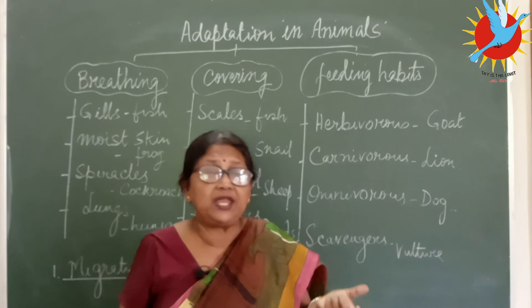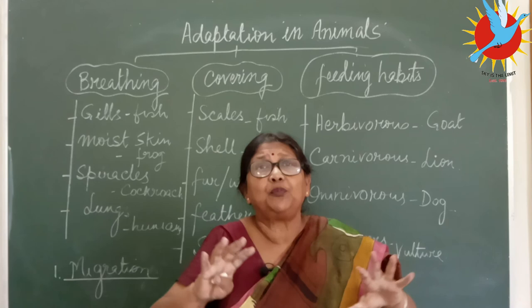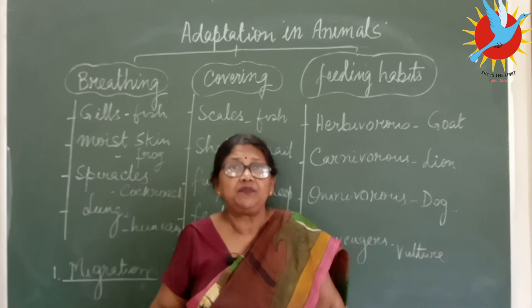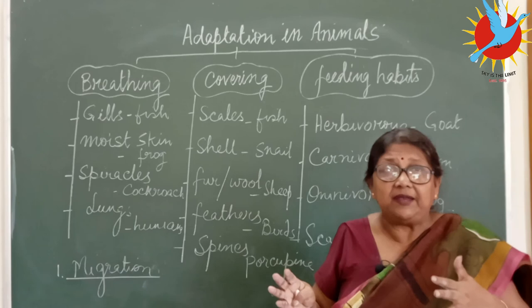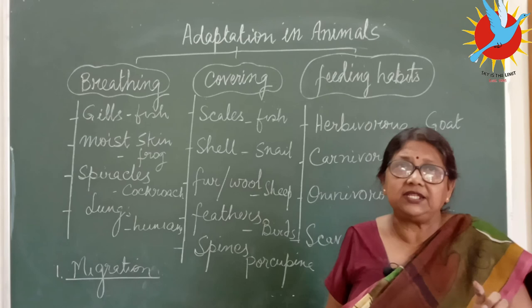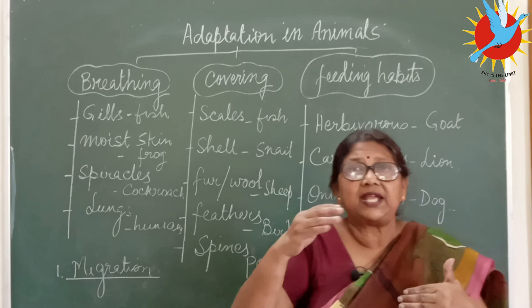From the Arctic and Antarctic regions, during winter, large flocks of birds migrate in groups to warmer tropical countries. They stay, pass the time, and once conditions become favorable they return. Migration is a temporary movement from one place to another for food, shelter, and breeding purposes. More examples are given in the PDF notes. This completes the revision of the full chapter. Thank you, children.